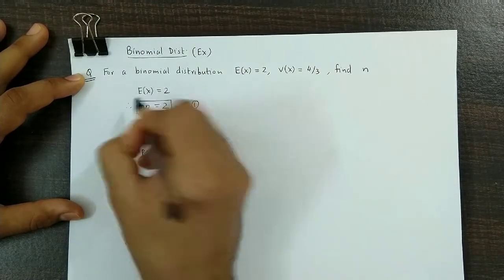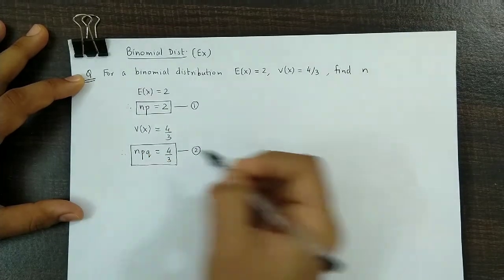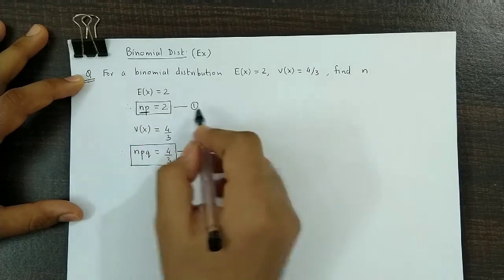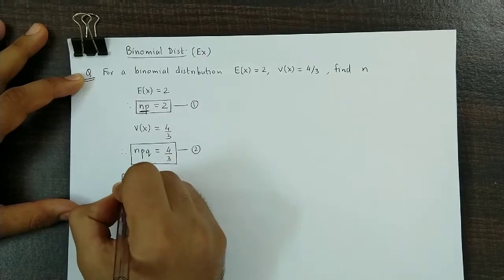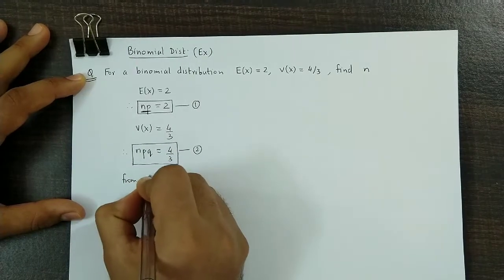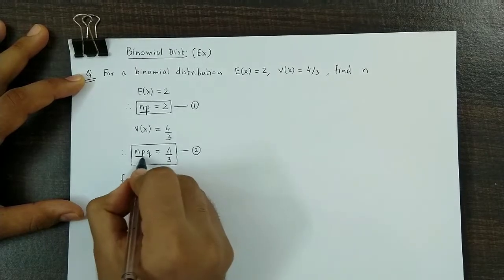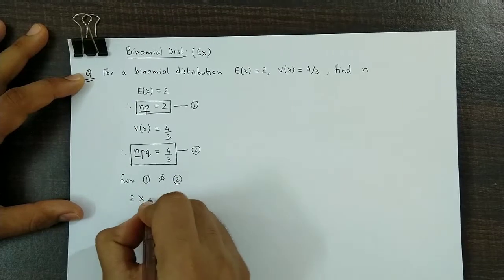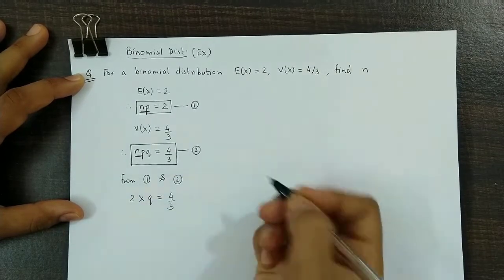So NP is 2 and NPQ is equal to 4/3. Now we substitute the value of NP from equation 1 in equation 2. So we combine these two. From equations 1 and 2, we replace this NP by 2. So 2 times Q is equal to 4/3.